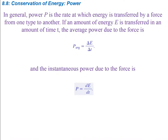Let's talk about power. In general, power is the rate at which energy is transferred by a force from one type to another. In an amount of energy E transferred in an amount of time T, the average power due to this force is the change in energy over the change in time, which is also equal to the work done over the change in time — because the change in energy is the work. For an instantaneous moment, we create a very small time dt, giving us the small amount of energy transferred or work done in that time, so this turns into a derivative: it's the derivative of energy with respect to time.